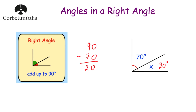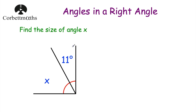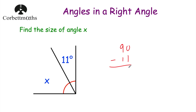Let's have a look at another example. This time we've got a right angle and we've been asked to work out the size of angle x. It's a right angle, so the two angles will add together to give us 90 degrees. So if we take the given angle, 11 degrees, away from 90 that'll tell us what's left for x. So if we do 90 take away 11, let's see what we get.